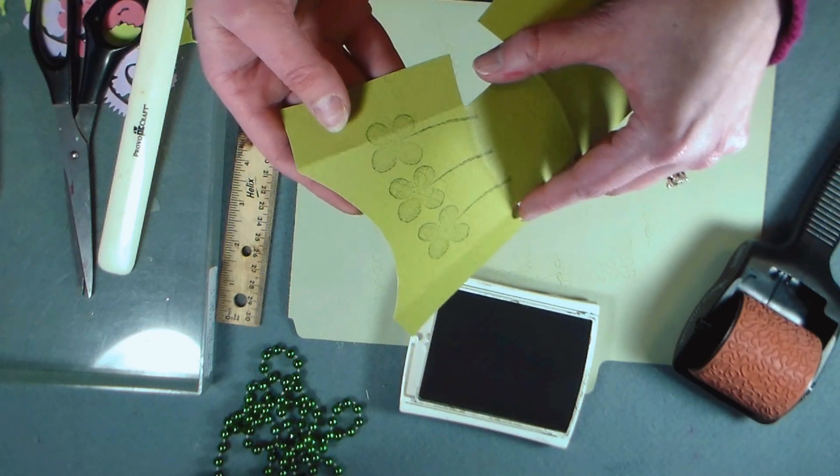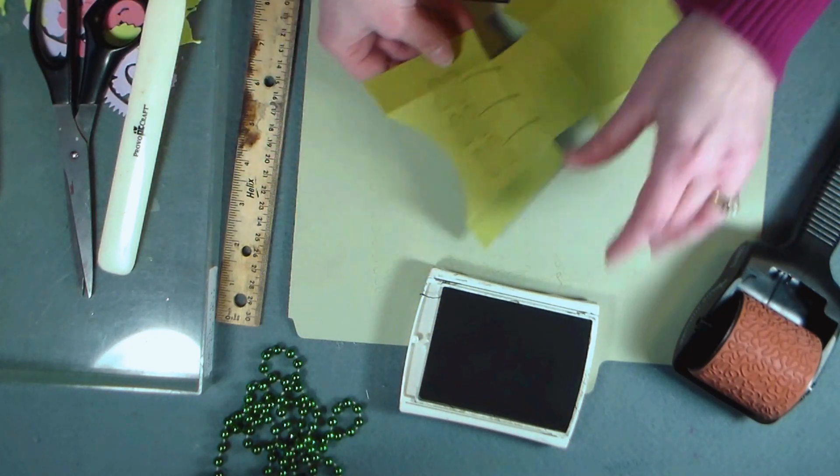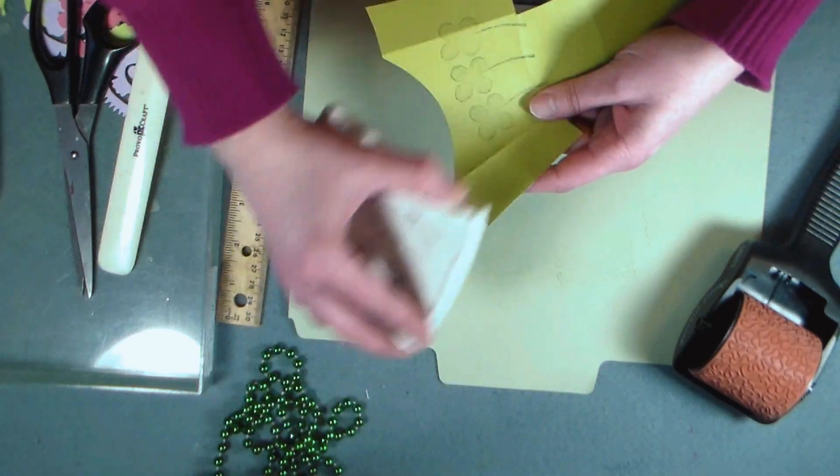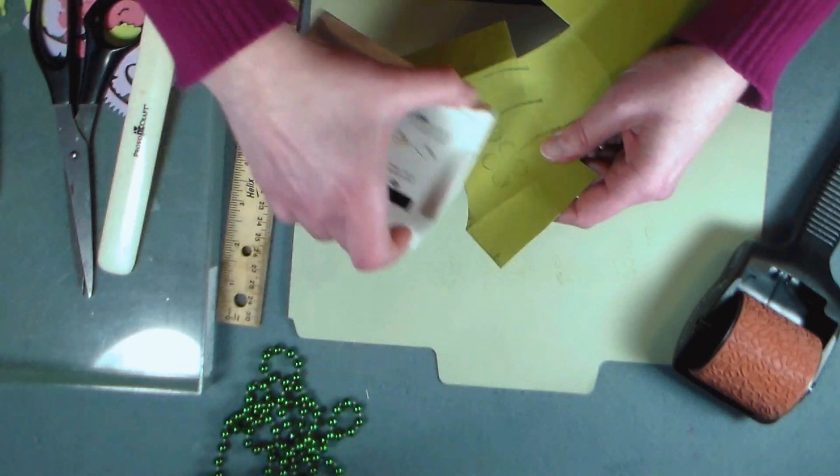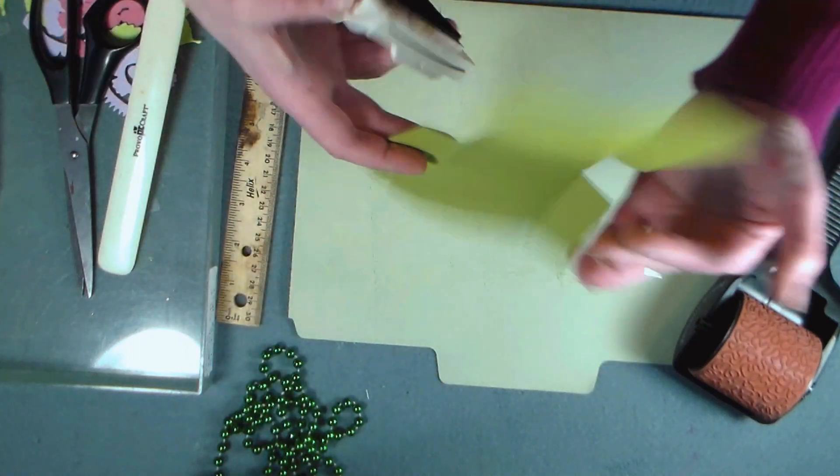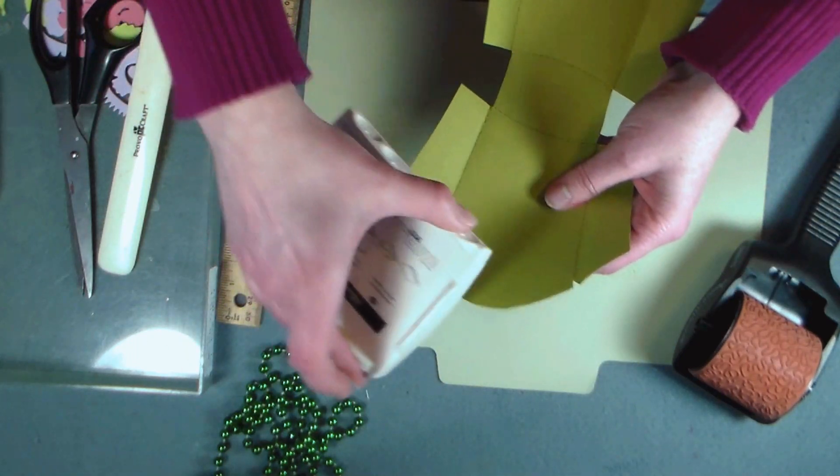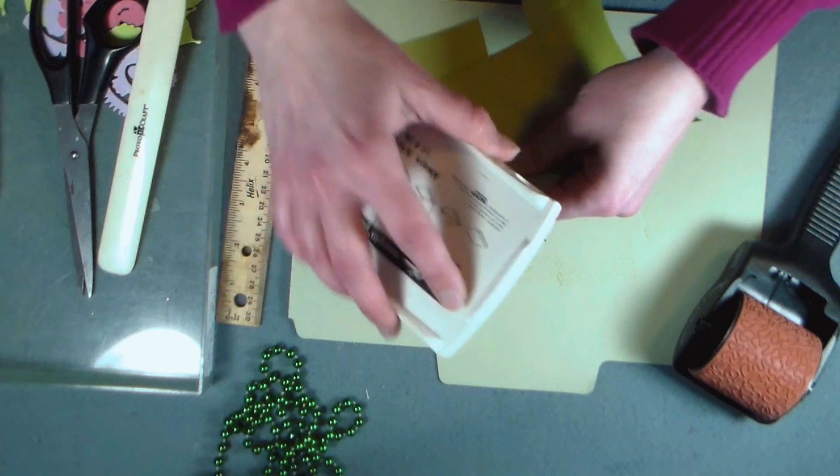Another nice touch to add to any paper crafting project if you have ink is to ink the edges of your project. It just takes a few seconds by rubbing the edge of the box with your ink pad. It gives it a really nice finished look and really covers up any mistakes that you may have made when you were cutting.